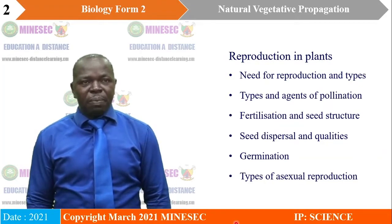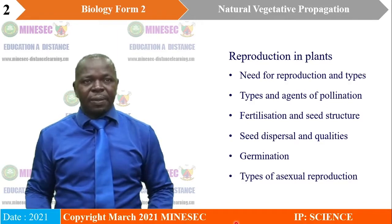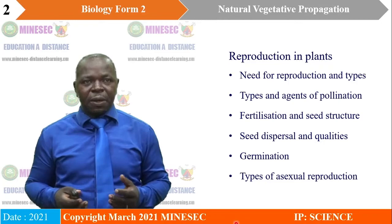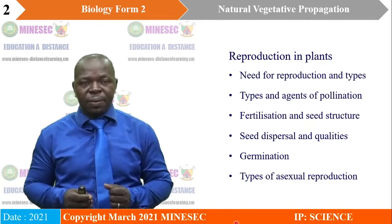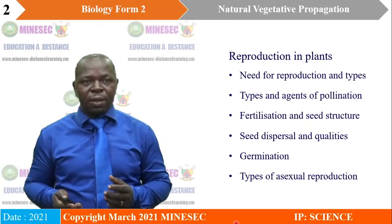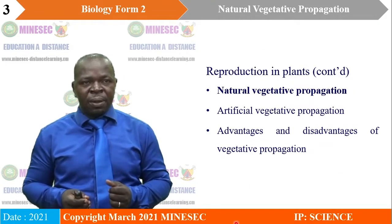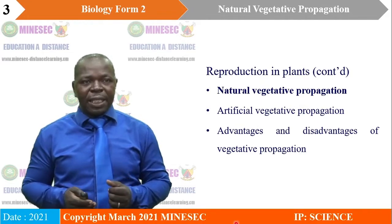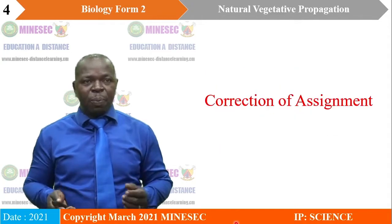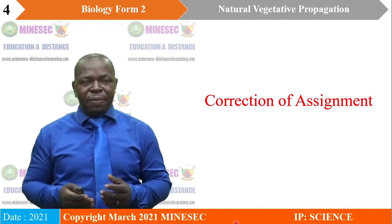This topic, reproduction in plants, contains the following lessons: need for reproduction and types; types and agents of pollination; fertilization and seed structure; seed dispersal and qualities; germination; types of asexual reproduction; natural vegetative propagation; artificial vegetative propagation; and advantages and disadvantages of vegetative propagation. We will begin with the correction of the assignment given to you last lesson.